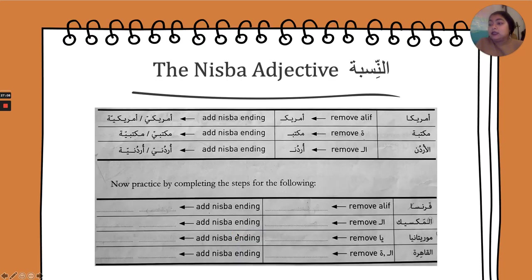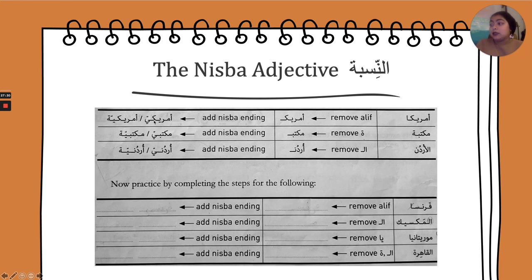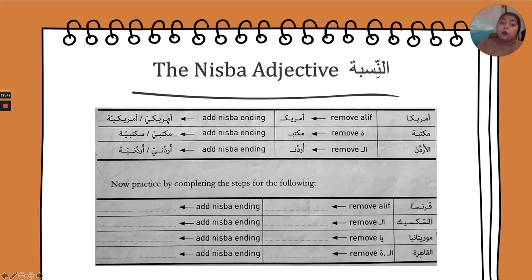Let's look at examples from the book. America: it doesn't start with alif-lam, but it ends in an alif — so we drop the alif. Then we add the nisba ending: Amriki for masculine. For the feminine: Amrikiya. So 'huwa Amriki' — he's American; 'hiya Amrikiya' — she's American. 'Walidi Amriki' — my father is American; 'walidati Amrikiya' — my mother is American.